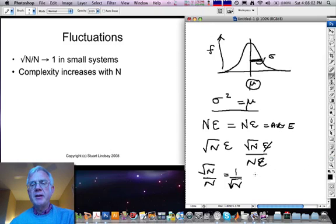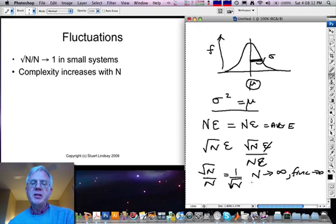So you see then, in a system of many particles, the fluctuations go to zero. But in a system of a few particles, they become significant.